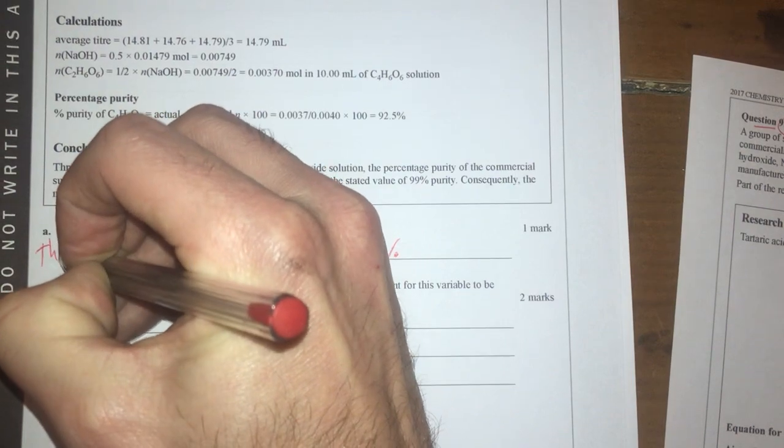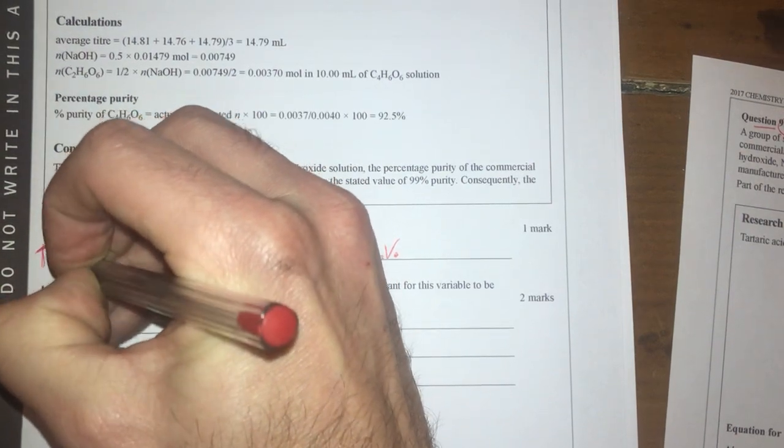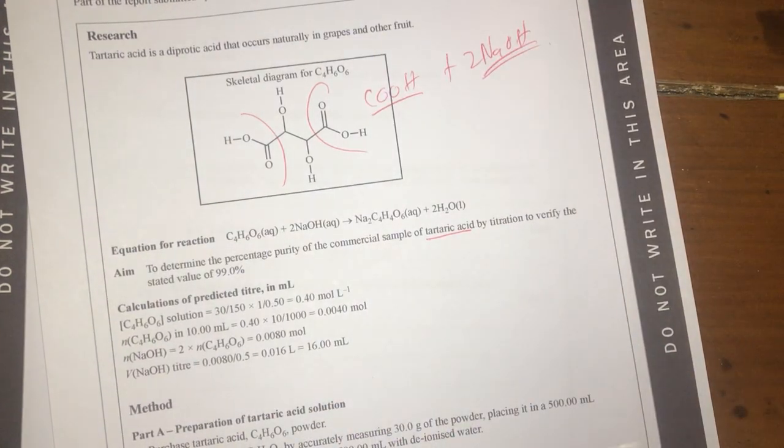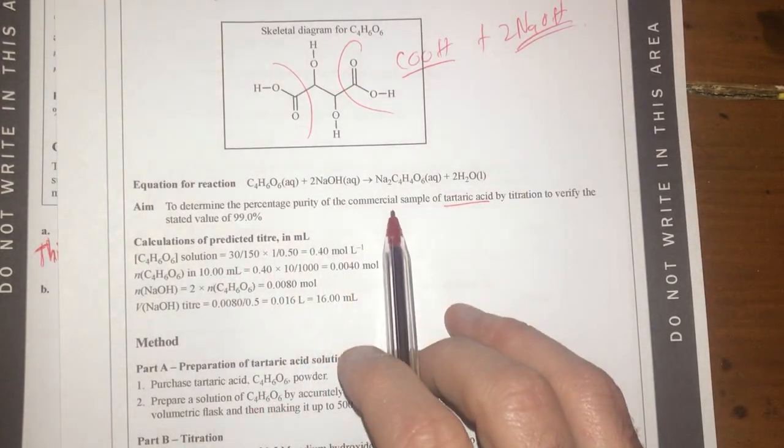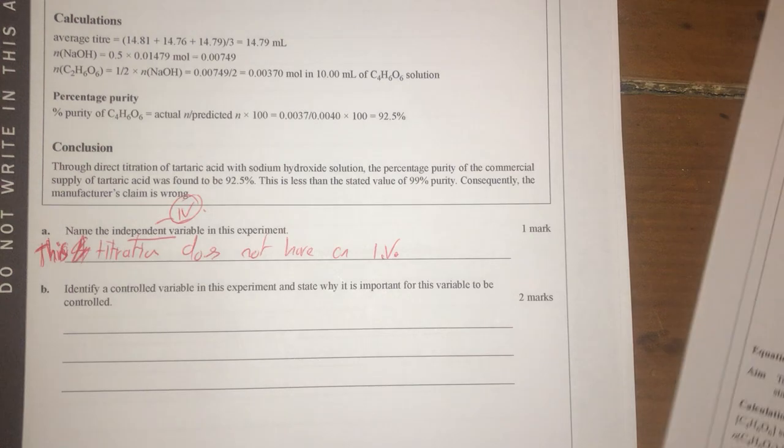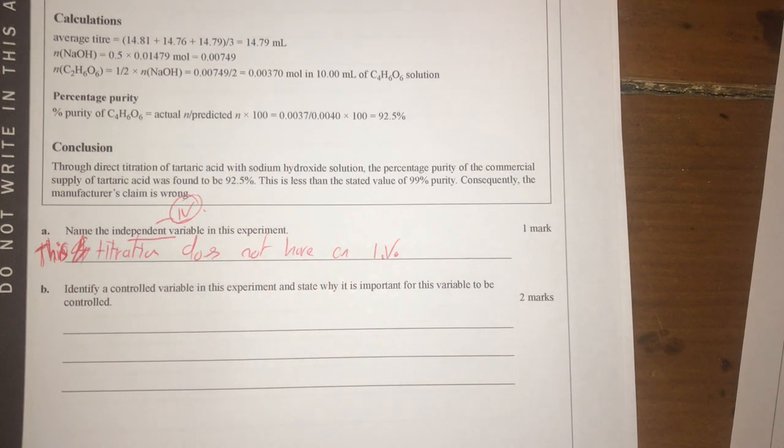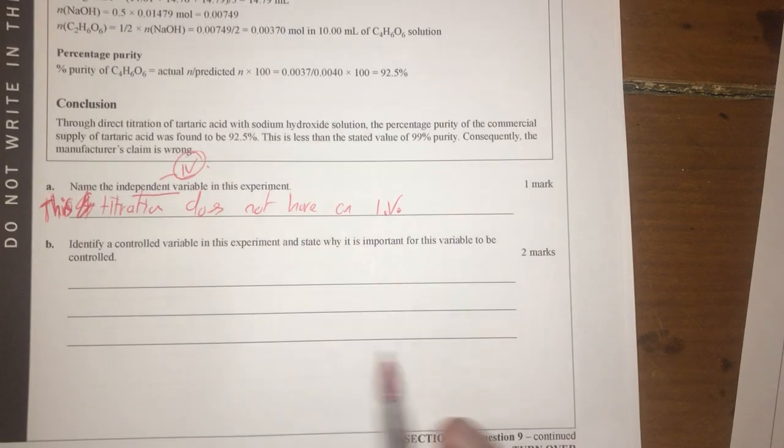Because technically, you could do titrations on a number of different commercial samples. And that would mean your commercial sample would be the independent variable. But this one, we're not. We're actually just taking the same stuff over and over again. So therefore, we're not changing anything. So that means it does not have an independent variable. All right, moving on.